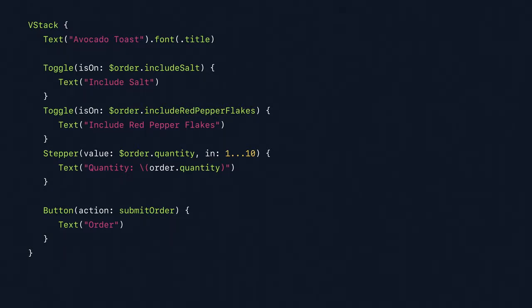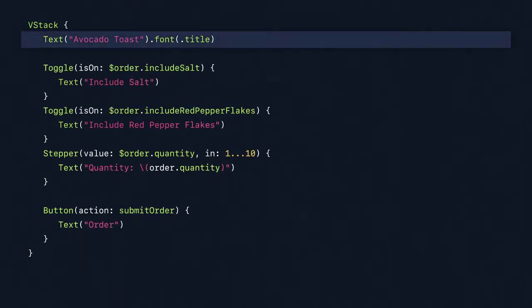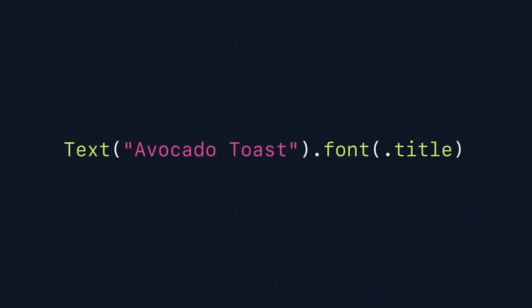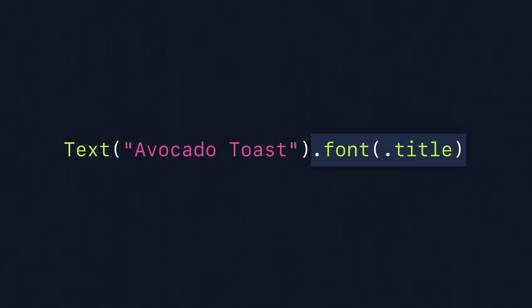Going back to our example app, there's one more important piece of syntax we haven't covered yet — setting the font for our title. First, we initialized our text, which is another kind of view in SwiftUI. Then we called a method on the text named font and passed it a system-defined text style. This kind of method is known as a modifier in SwiftUI, and a modifier is just a method that creates a new view from an existing view.